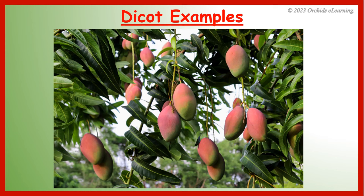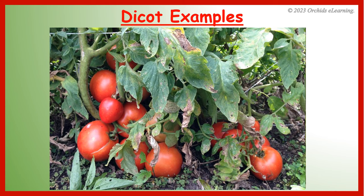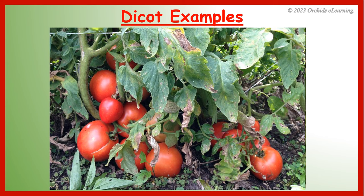Examples of dicot plants include Mango, Almond, Peas, Tomato, Apple, etc.